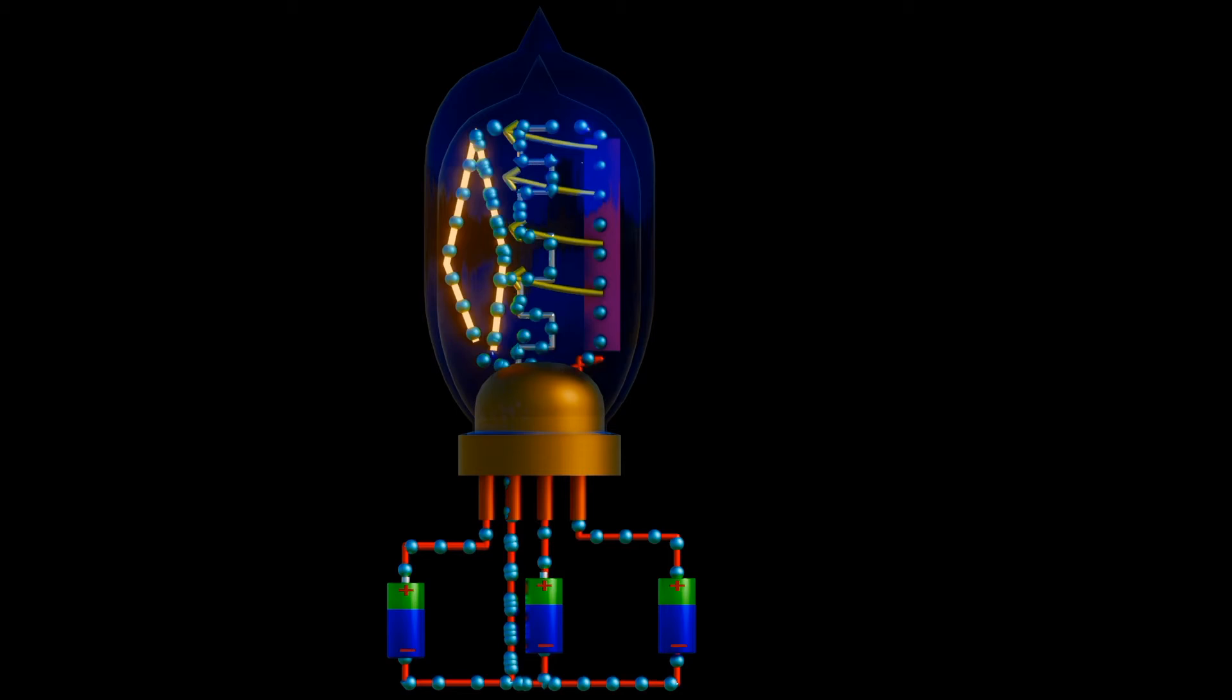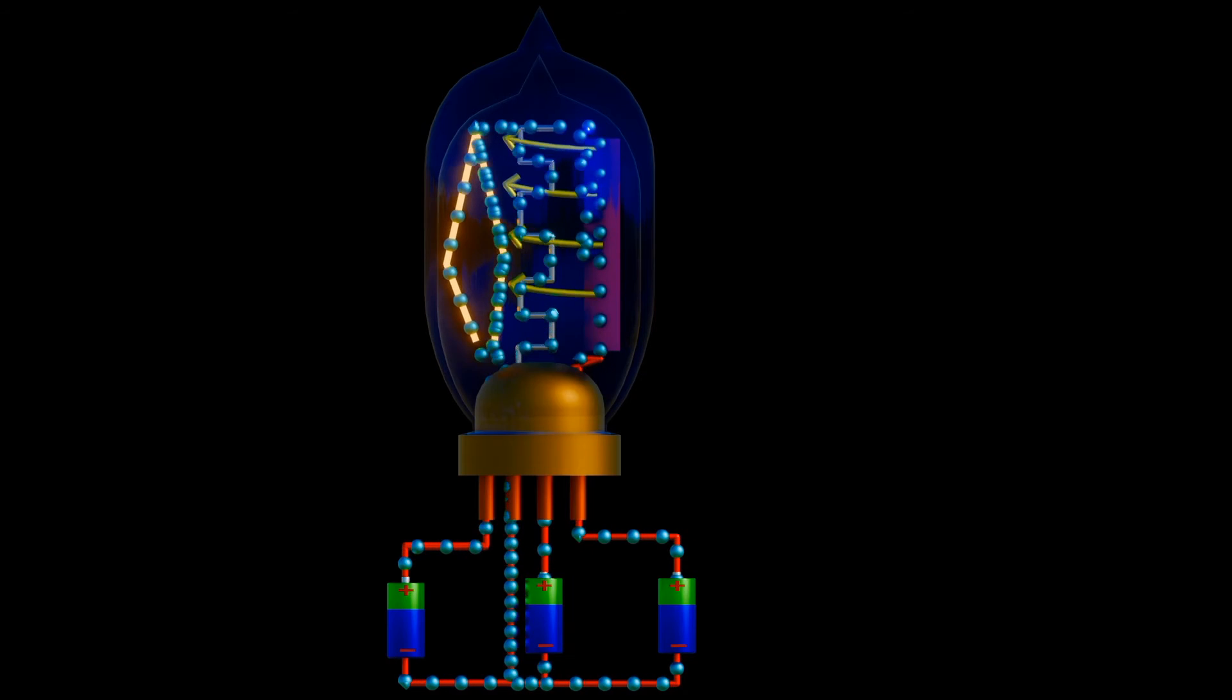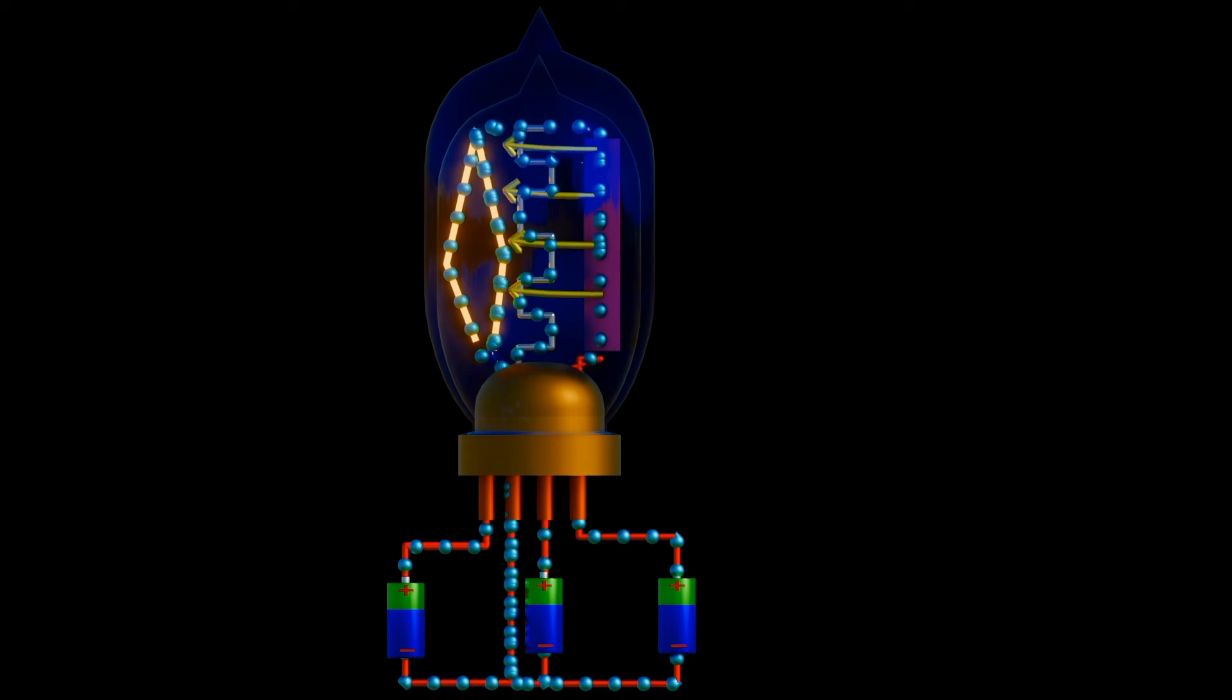If the grid is supplied with a positive potential battery, the electric field will be formed from the grid towards the plate. This enables the electrons emitted by filament to cross towards the plate, making this triode forward biased.